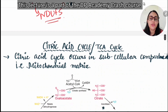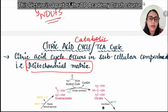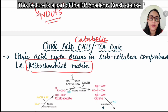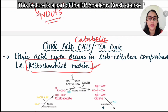The TCA cycle, also known as the citric acid cycle, occurs in the mitochondria. Remember, all catabolic reactions occur in the mitochondria and anabolic reactions occur in the cytoplasm, with exceptions: glycolysis and glycogenolysis occur in the cytoplasm. Apart from those, all catabolic reactions occur in the mitochondria.